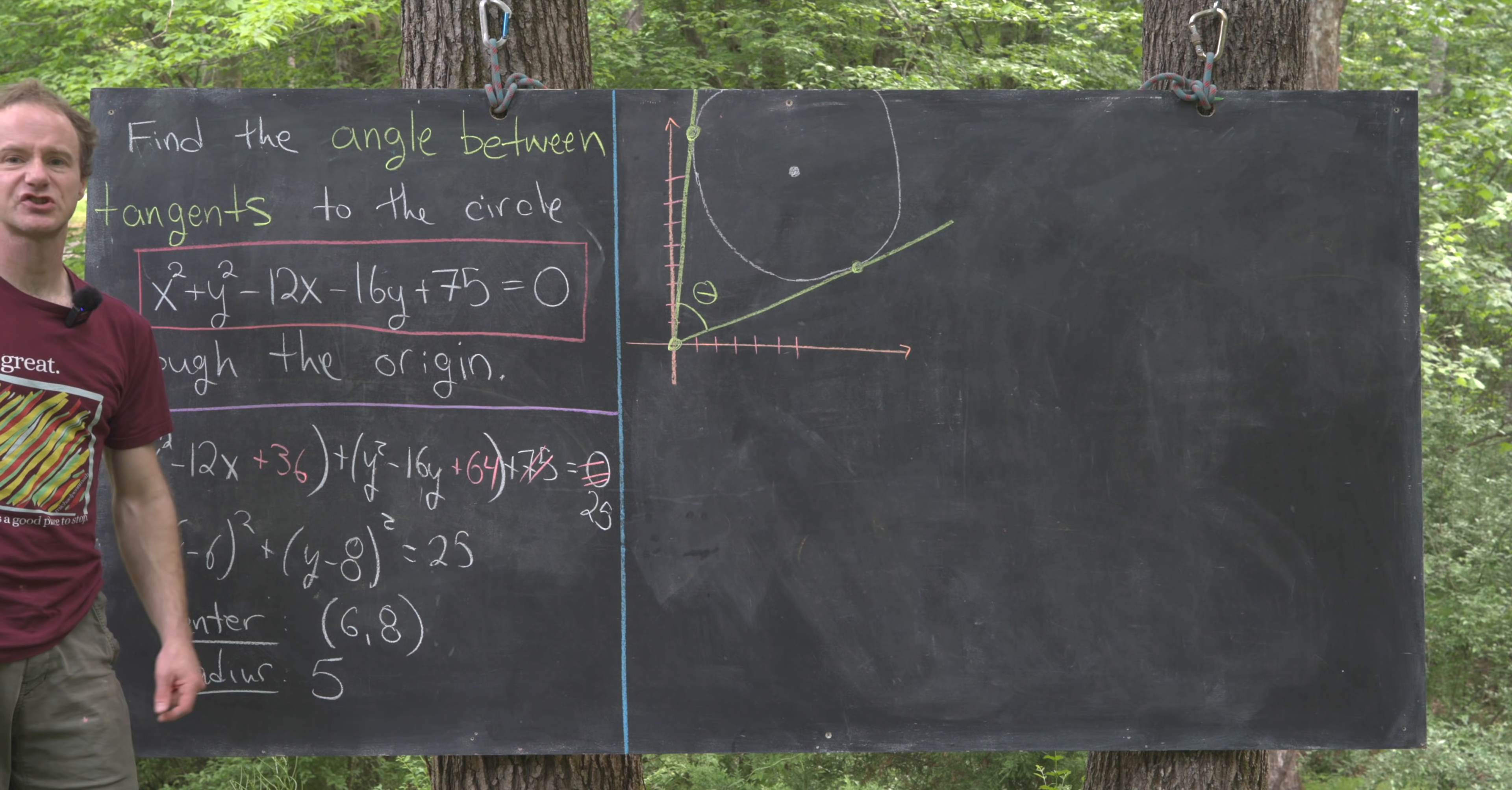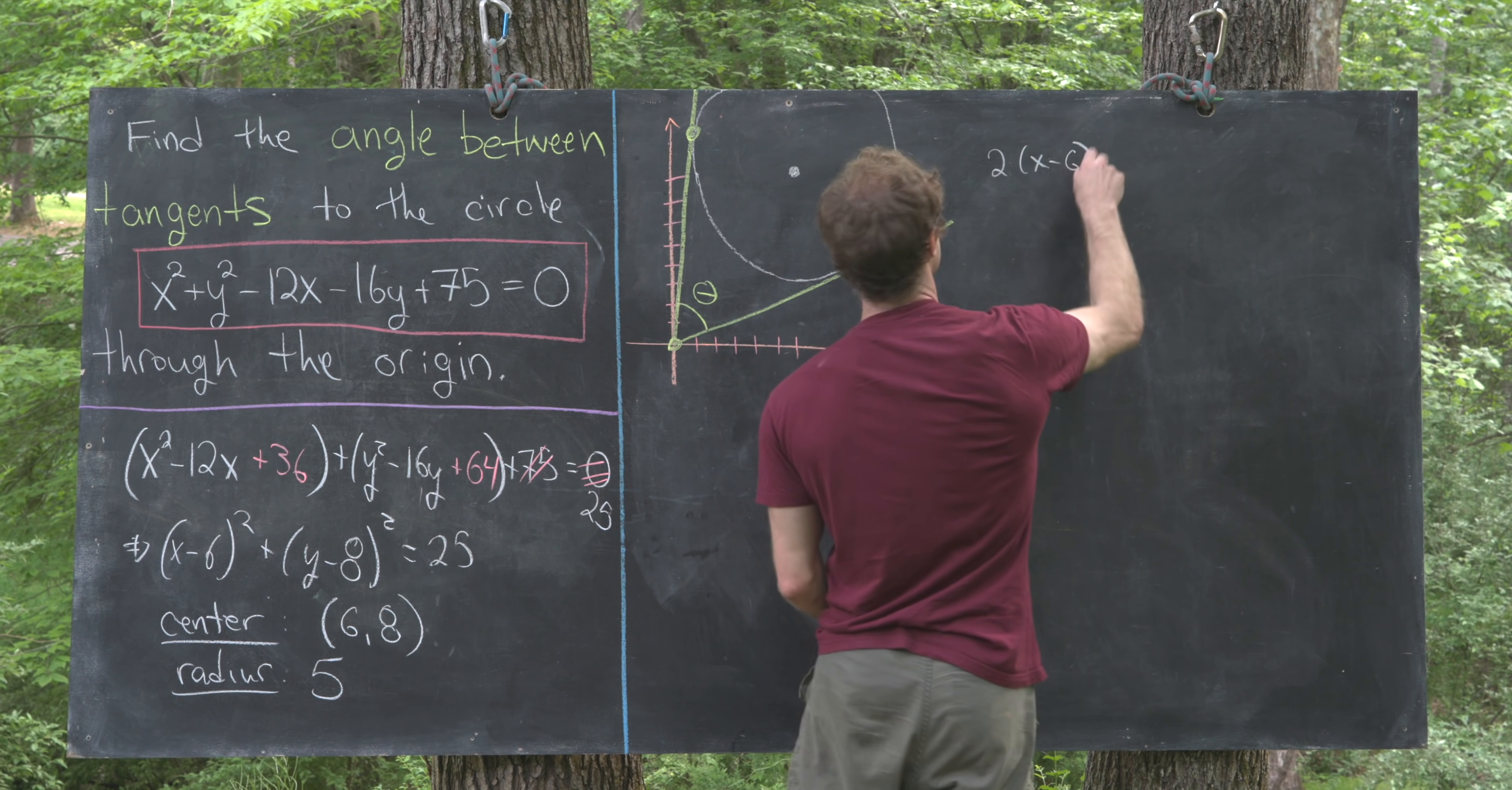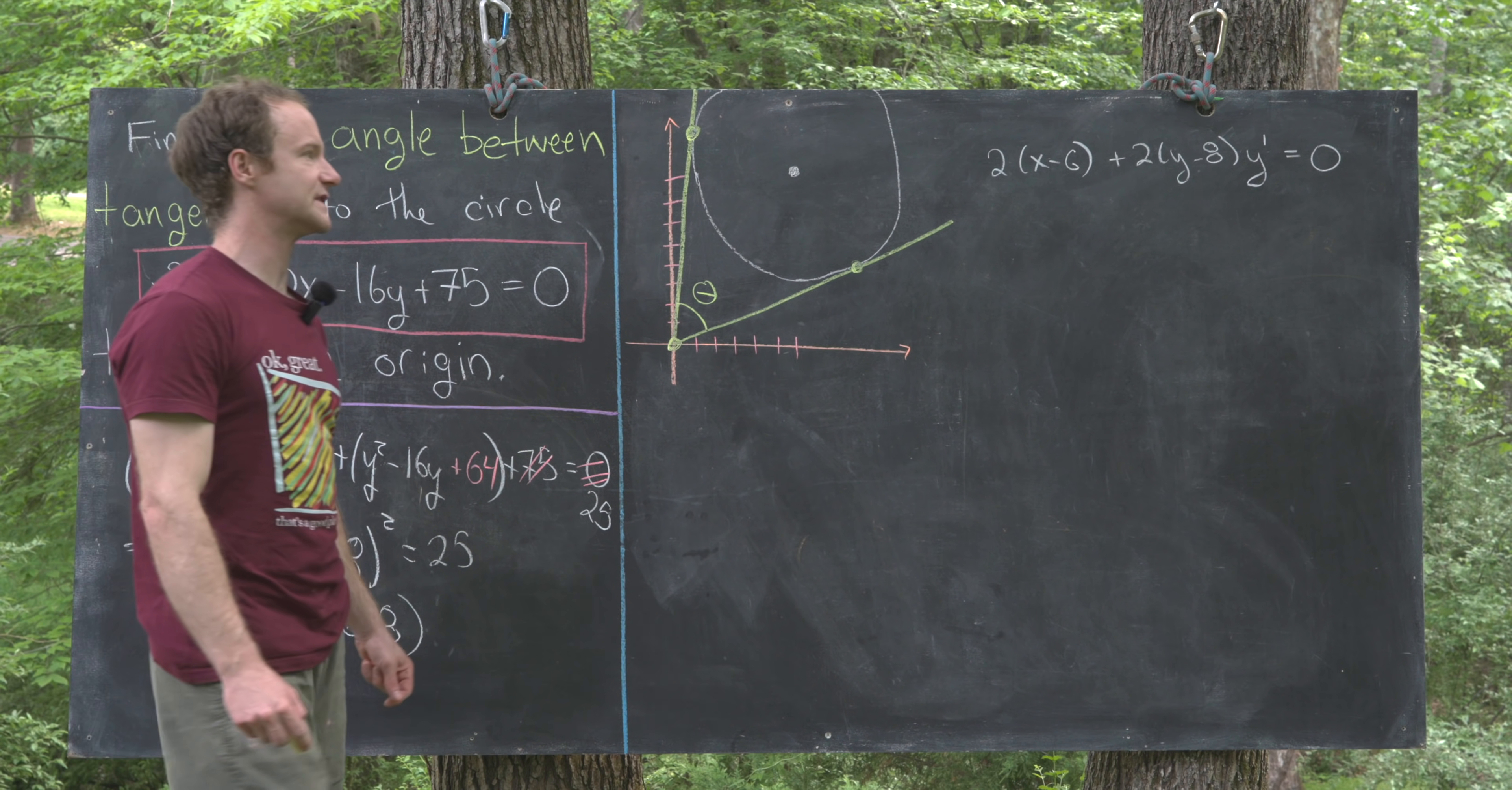What we'd like to find is these intersection points, and then we can use geometry of vectors to calculate this angle theta. Let's start by taking the implicit derivative of this equation which defines the circle, so we can get the slope of the tangent line in terms of which point on the circle we're at. Taking the derivative, we'll have 2 times x minus 6 plus 2 times y minus 8 times y prime equals 0.